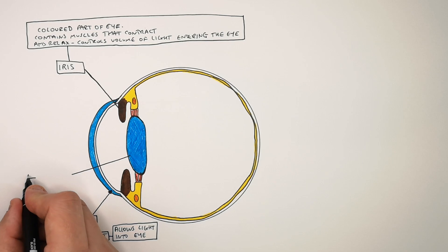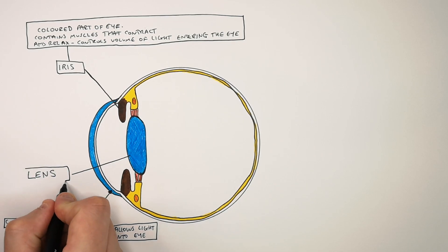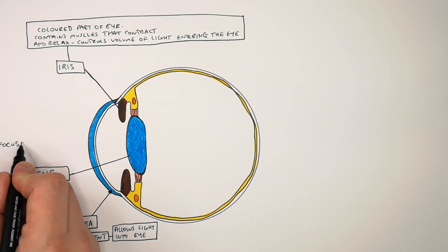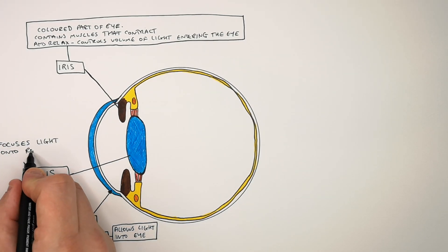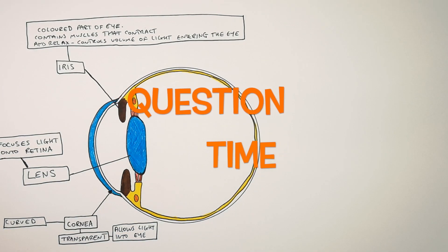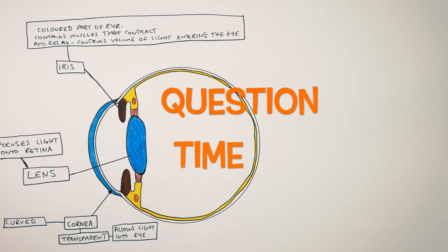This part of the eye is called the lens. And the lens is able to change shape. So therefore it will focus light onto the retina. It's question time. Attempt these questions to check your understanding.